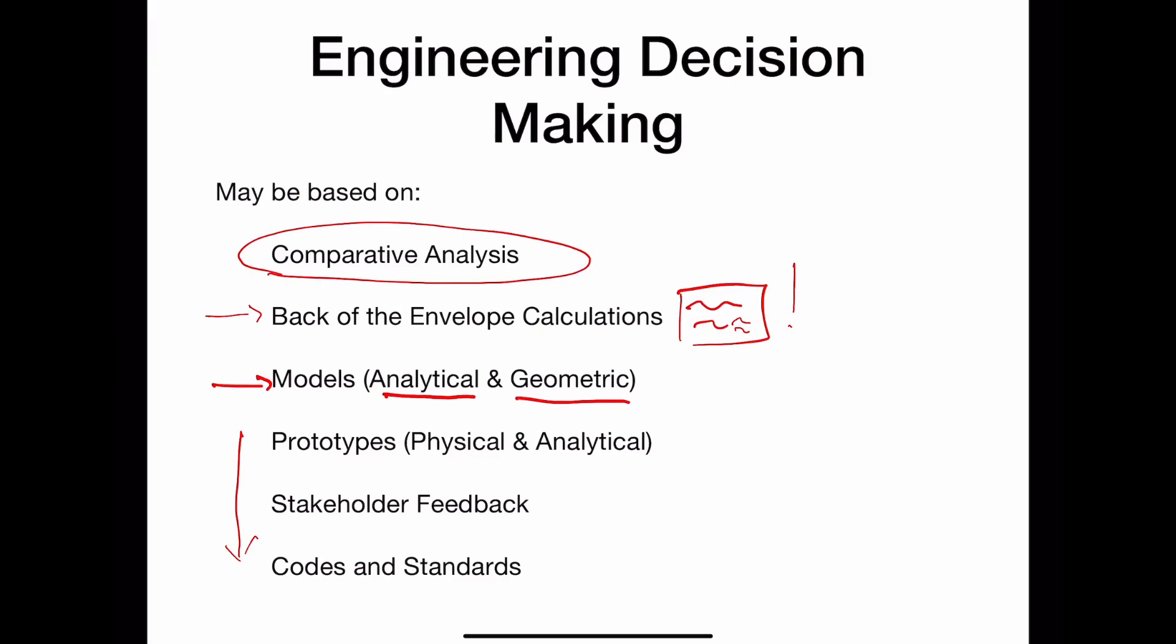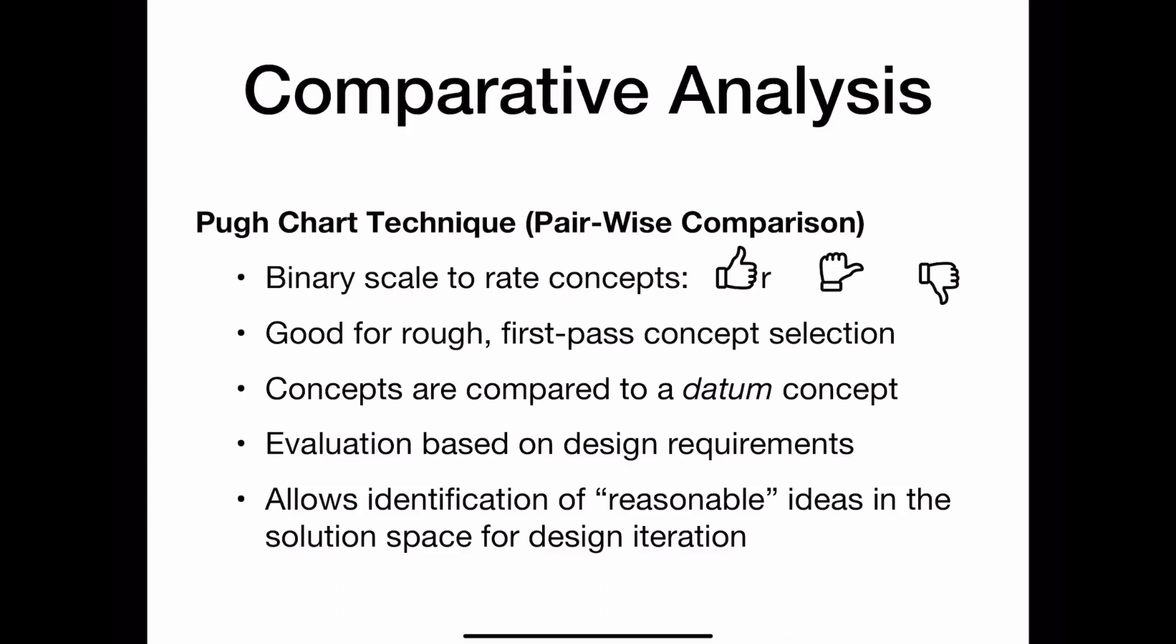So in a Pugh Chart, the system is very simple in that we are doing a pairwise comparison between some known concept and all of our other concepts. And when we're evaluating our concepts, it's a very simple system of either that concept has a positive aspect, and so we'll give it a plus one. That concept has a negative aspect, and so we'll give it a minus one. Or it's just kind of neutral, and we'll give it a zero.